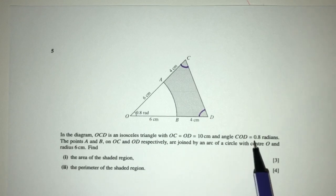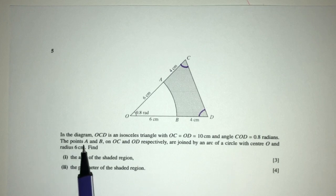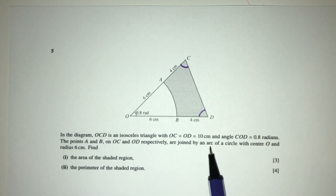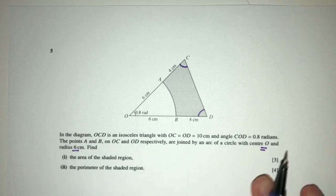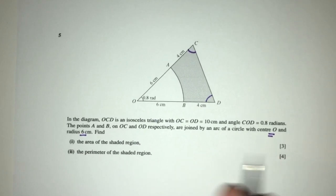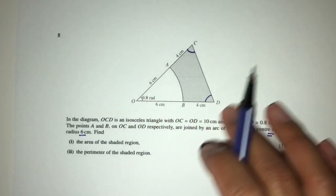Now the angle COD is 0.8, so this is 0.8. The points A and B on OC and OD respectively are joined by an arc of a circle center O and radius 6. So simply, these are the information we have on this diagram.